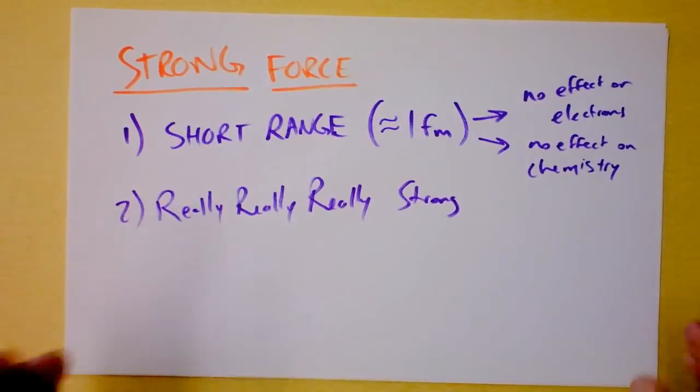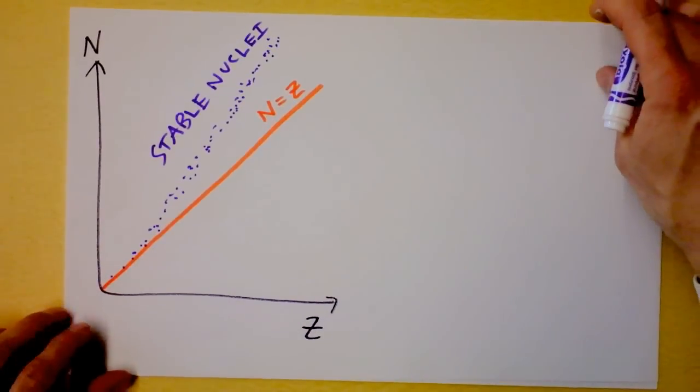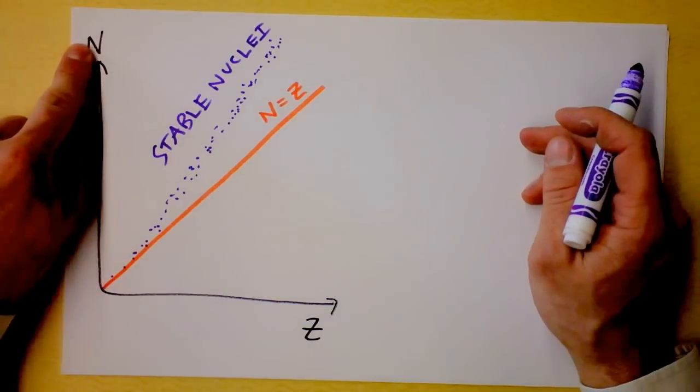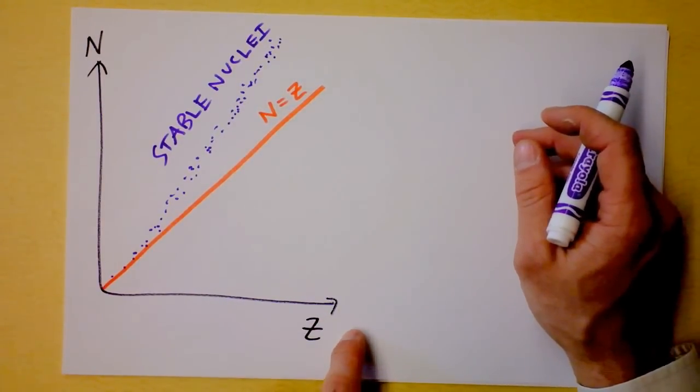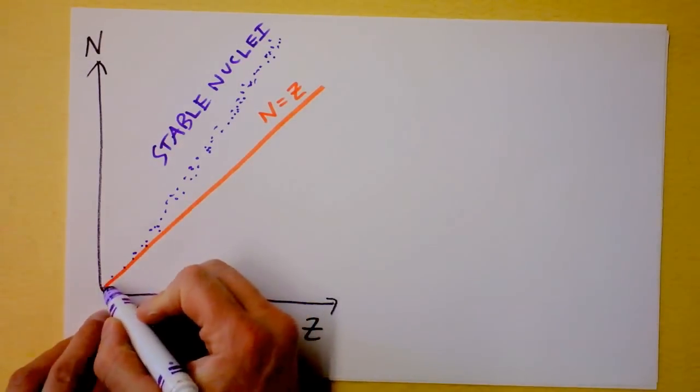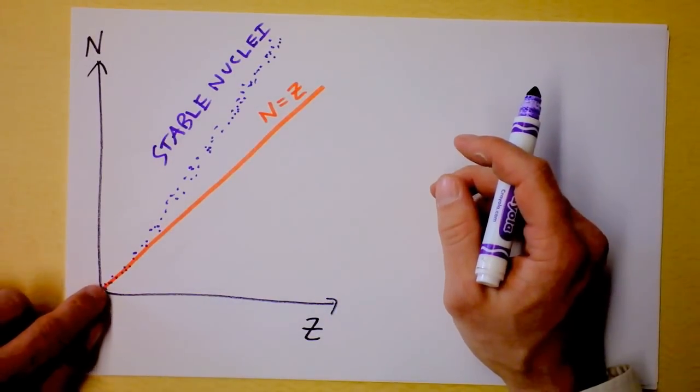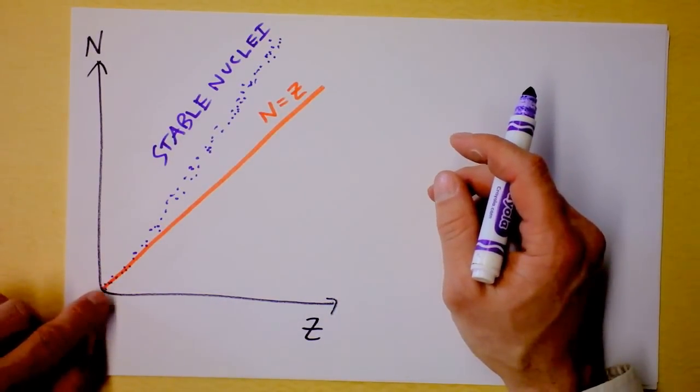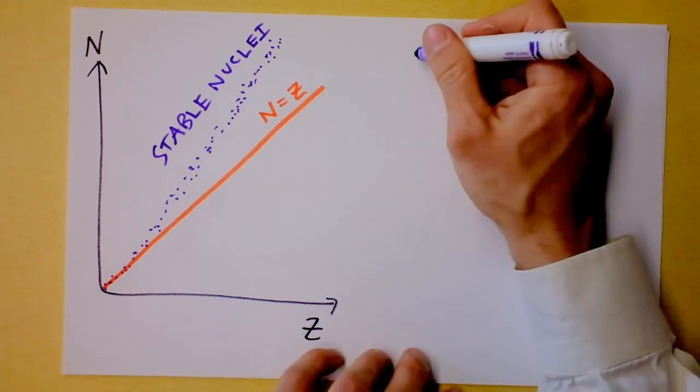So let's talk about the stability of a nucleus. I made you a little graph right here. And this graph is a graph of the number of neutrons versus the number of protons in an atom. And I've graphed the line N equals Z because, early on, these data points, the stable nuclei, do follow the general pattern where, if you've got another proton, you're probably going to need another neutron. So let's just look at some examples.